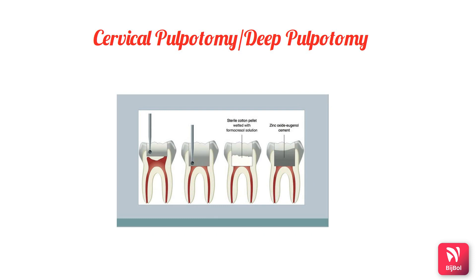Cervical pulpotomy involves removal of the entire coronal pulp to the level of the root orifices. The key difference is that in partial pulpotomy, only unhealthy pulp is removed, whereas in cervical pulpotomy, the entire coronal pulp is removed.